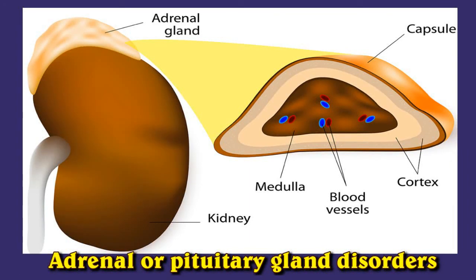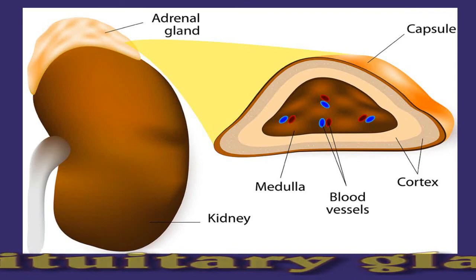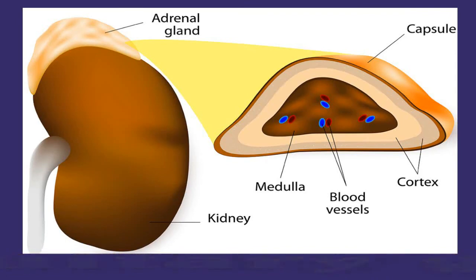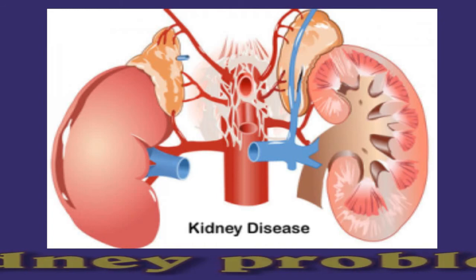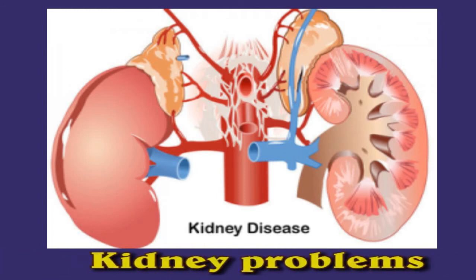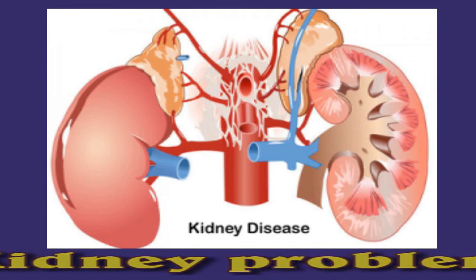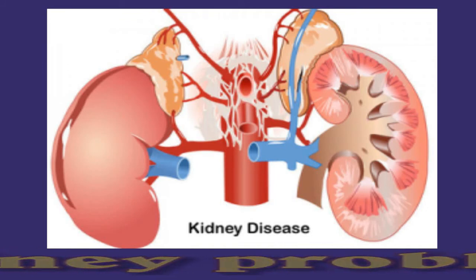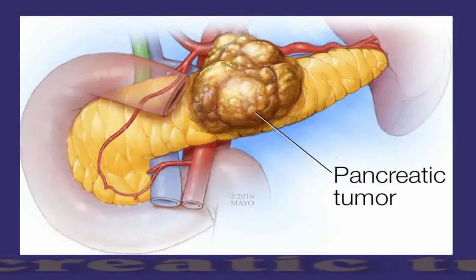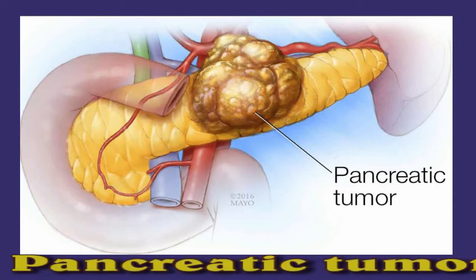Adrenal or pituitary gland disorders: problems with the pituitary gland or adrenal glands can cause hypoglycemia because these parts of the body affect the hormones that control glucose production. Kidney problems: the kidneys help the body process medication and excrete waste. If a person has a problem with their kidneys, medication can build up in their bloodstream, and this type of buildup can change blood sugar levels and lead to hypoglycemia.